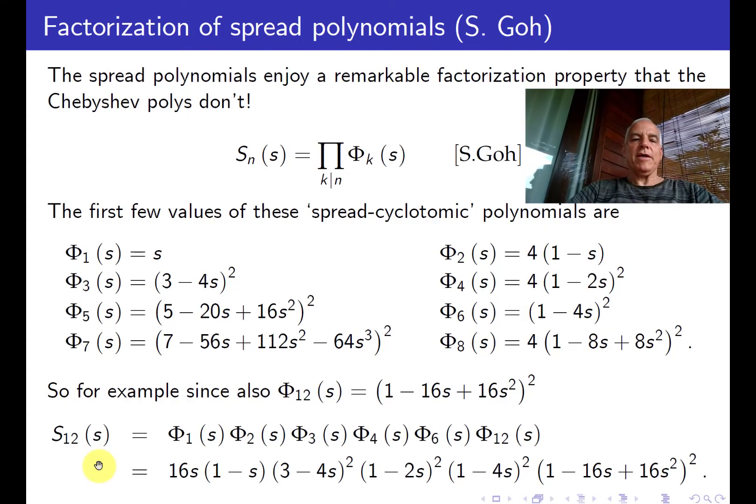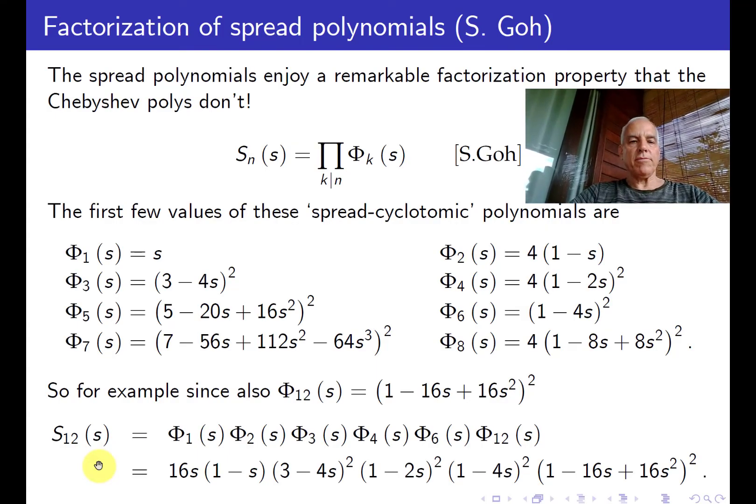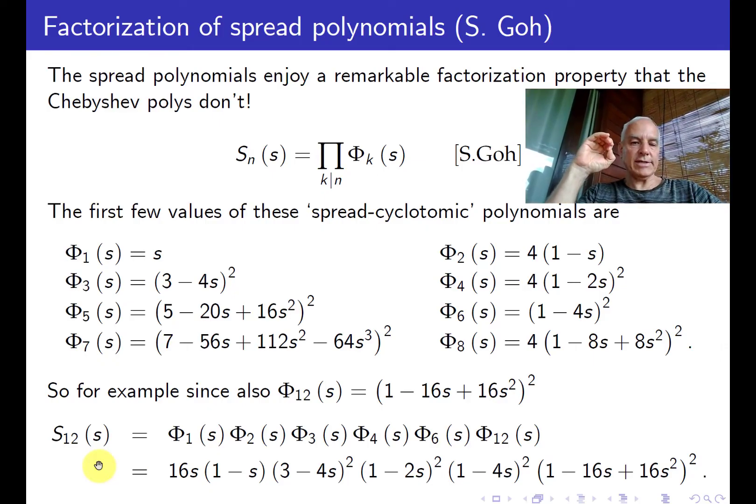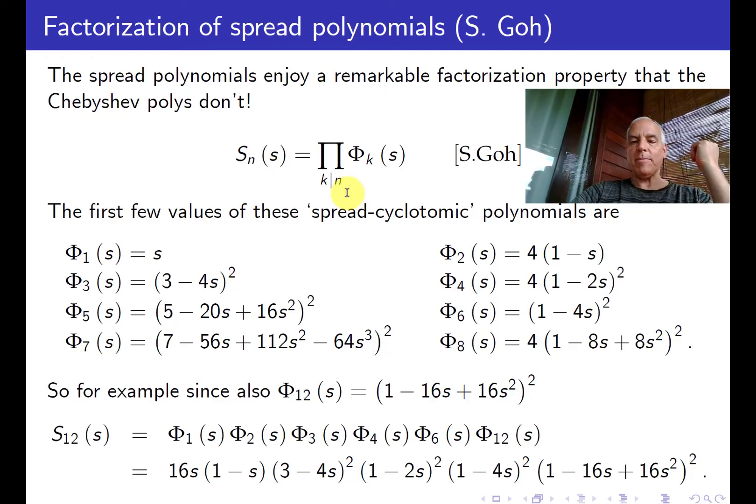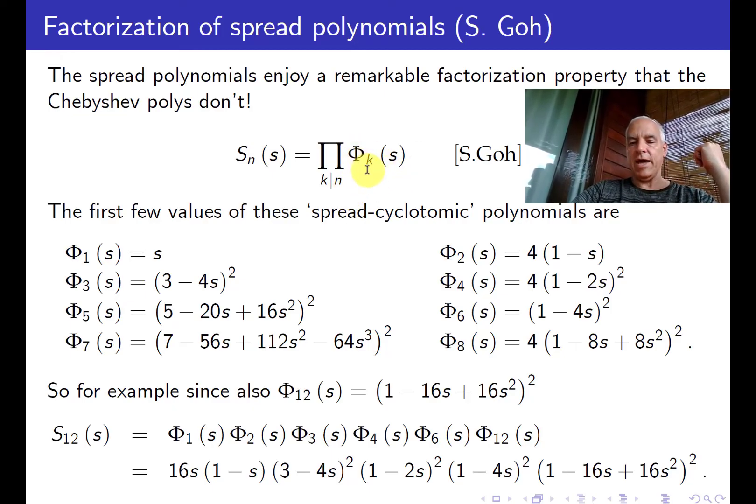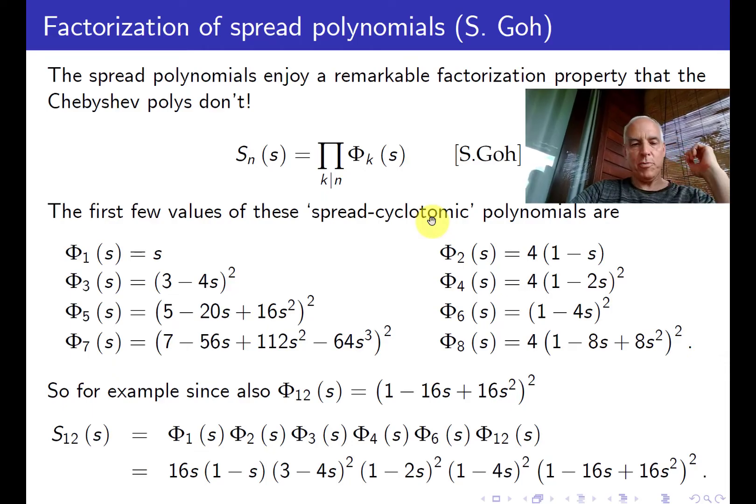I've already told you about this, but let me reiterate, that the really crucial property that these spread polynomials have that the Chebyshev polynomials don't is that they have a very strong factorization. This is an observation of S. Goh, when he was an honor student with me. The observation is that Sₙ(S) factors as a product over K dividing N of some auxiliary polynomials Φₖ(S). We call them spread cyclotomic polynomials, or maybe just Goh polynomials.